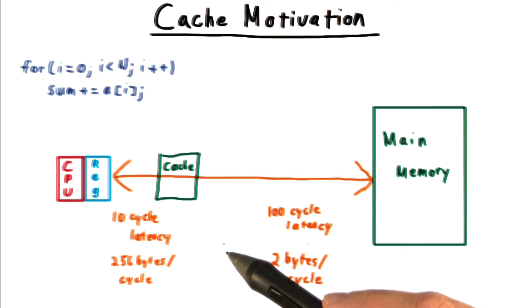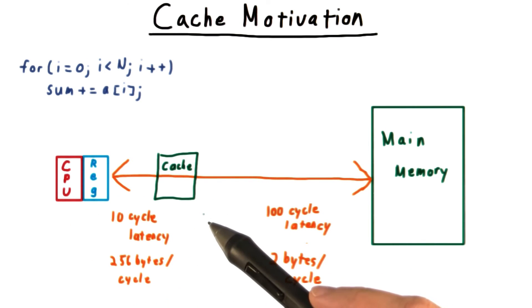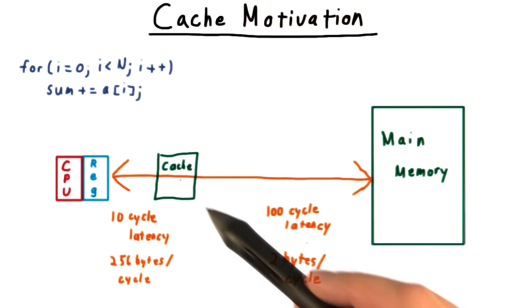We call this memory a cache. And here, we're looking at a latency of about 10 cycles. So, when the CPU wants the contents of some memory address, it looks in the cache first.